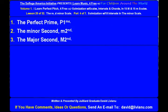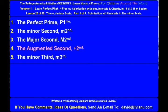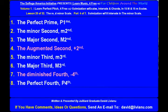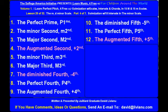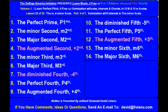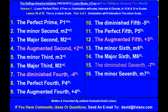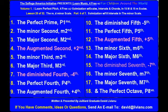The 18 intervals are: the perfect prime, the minor 2nd, the major 2nd, the augmented 2nd, the minor 3rd, the major 3rd, the diminished 4th, the perfect 4th, the augmented 4th, the diminished 5th, the perfect 5th, the augmented 5th, the minor 6th, the major 6th, the diminished 7th, the minor 7th, the major 7th, and the perfect octave.